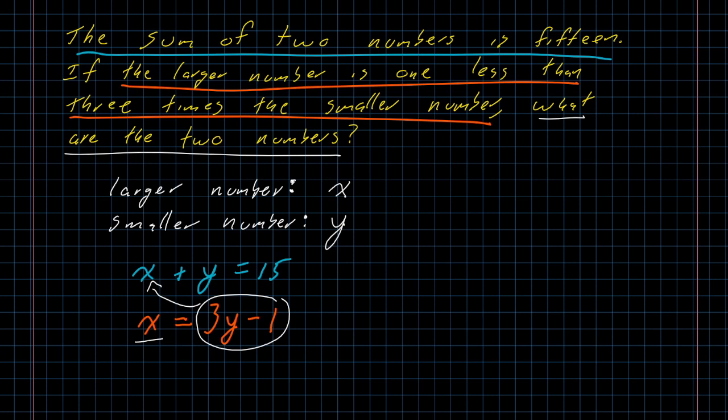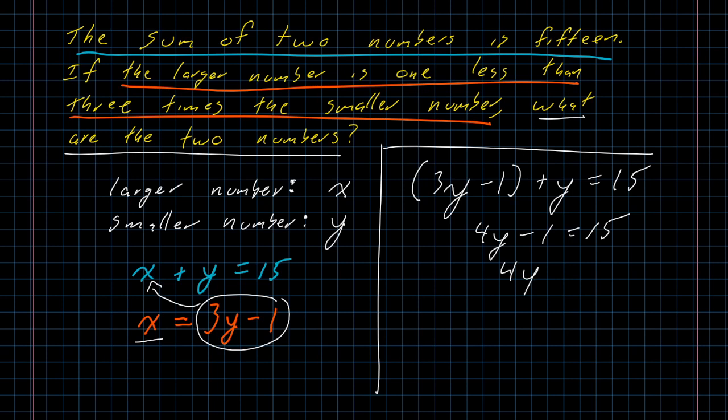So I can replace x with 3y minus one in that first equation. So instead of x plus y equals 15, it's 3y minus 1 plus y equals 15. Clean up. Combine some like terms. 4y minus 1 equals 15. Add 1 to both sides of the equation. 4y equals 16. Divide both sides of the equation by 4. y equals 4.